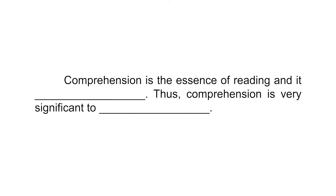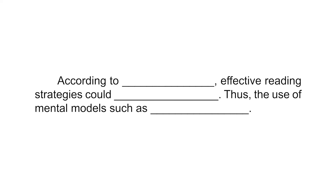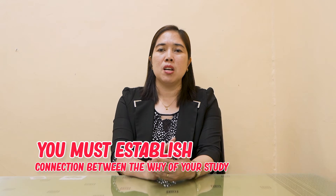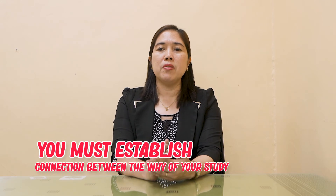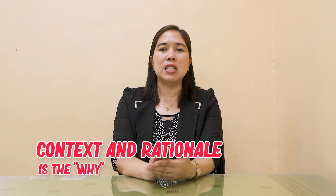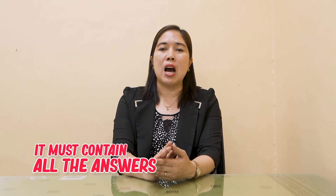For example, if your issue is about reading comprehension, elaborate more about the issue and cite some of your reviewed literature closely related to your study. Your discussion must be logically arranged until you are able to surface the issue you want to address. It is important that you establish the connection between the 'why' of your study to the proposed plan. Context and rationale is the 'why' of your study, and it must contain all the answers as to why there is a need to conduct your study.